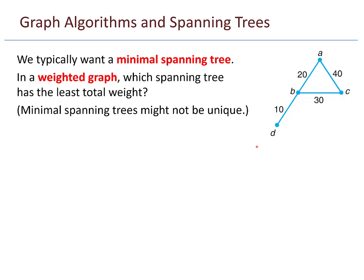We typically want a minimal spanning tree. In a weighted graph, which spanning tree has the least total weight? When I talk about a weighted graph, I'm really talking about putting numbers on the edges — those numbers are called weights. So this graph might represent the cost to travel from point D to point B: 10 units, or from B to A: 20 units. Perhaps you're building roads and these are the construction costs.